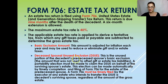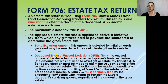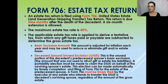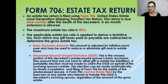This only applies if the taxpayer was married at the time of death, because you're transferring the deceased spouse's unused exclusion to the surviving spouse. You can't transfer this exclusion to a child or any other beneficiary of the estate — this is only for married couples.